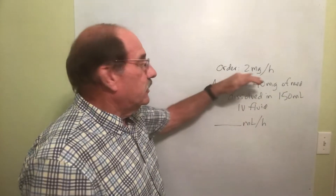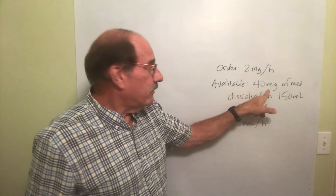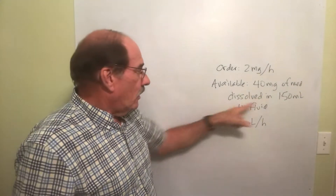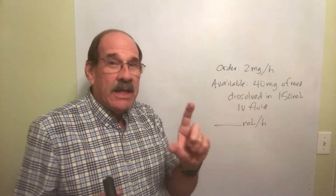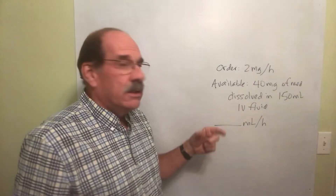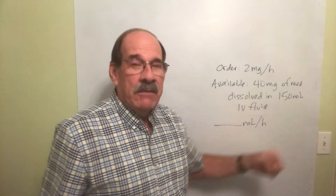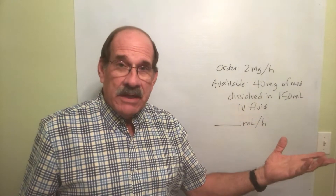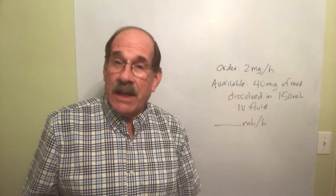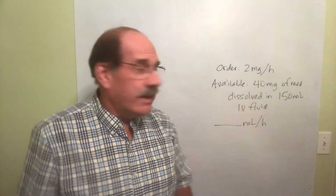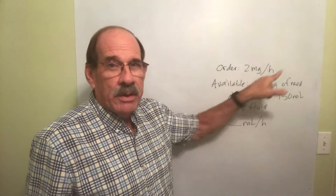Two milligrams per hour of whatever medicine it is. Now I've got 40 milligrams of that medicine dissolved in 150 milliliters of IV fluid. If I were told the total volume — which I am, 150 — and the total length of time I'm giving it, I could just divide and get this. But I'm not even told how long I'm going to do this.